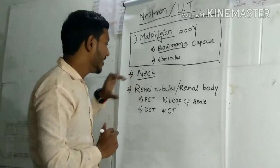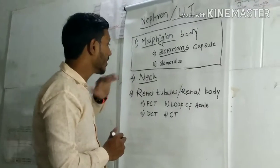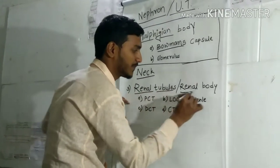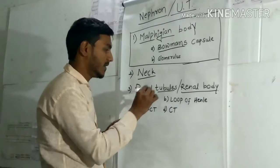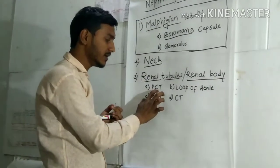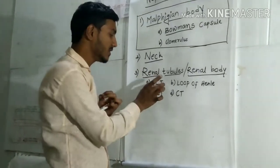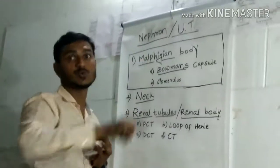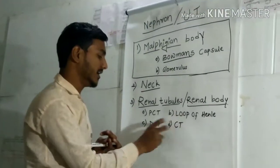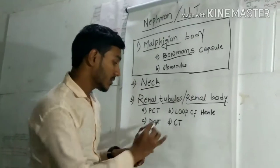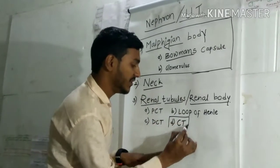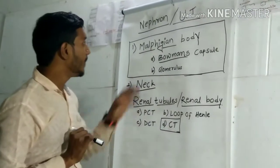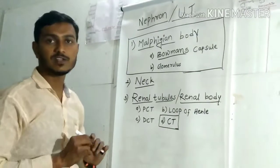Below the neck is the renal tubule or renal body. The renal body constitutes the rest of all parts of the nephron. The renal tubule or renal body consists of: first, the PCT — proximal convoluted tubule; then the loop of Henle, which is the U-shaped part; then it leads to the distal convoluted tubule.